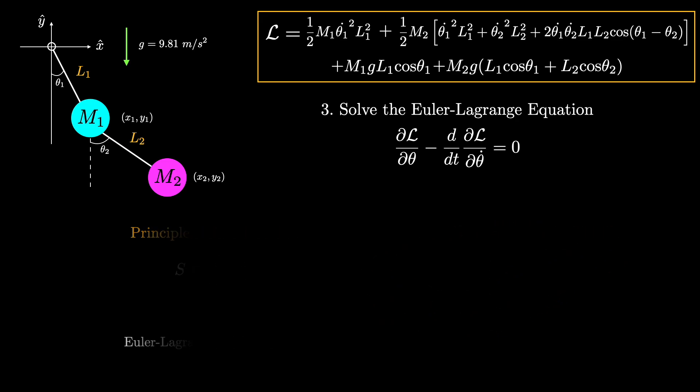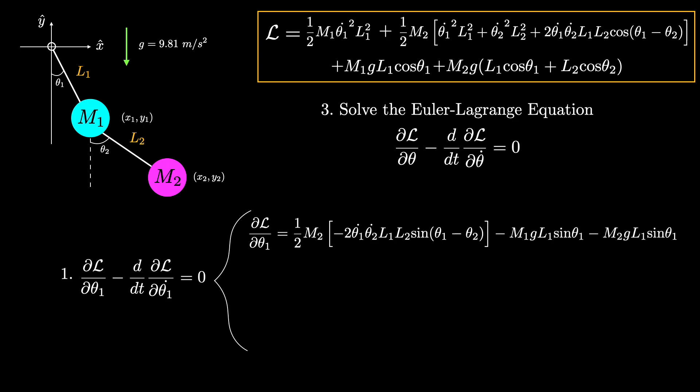Okay, so let's plug in the double pendulum Lagrangian into the Euler-Lagrange equation. We'll do this separately for theta1 and theta2. Starting with theta1, the first term says to take the derivative of the Lagrangian with respect to theta1. And since theta1 and theta1 dot are independent variables here, we get this expression. We can also cancel the twos and combine the last two terms to get a simplified form.